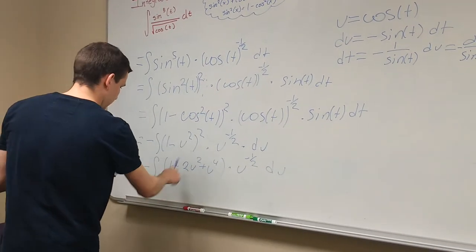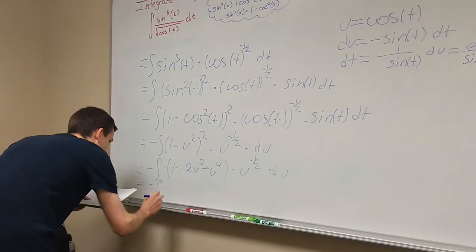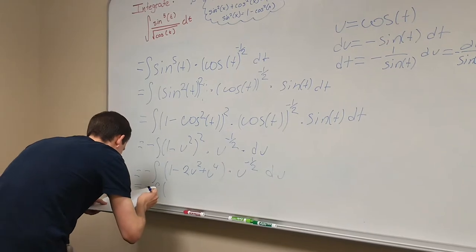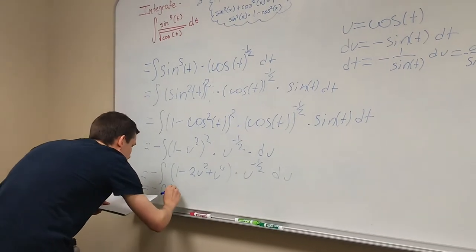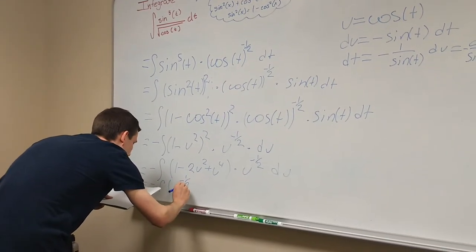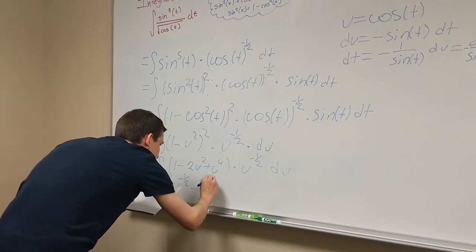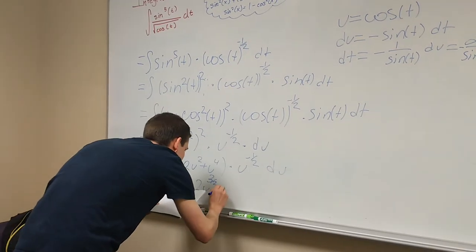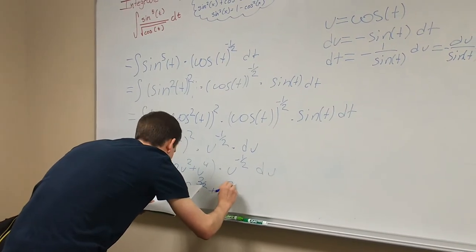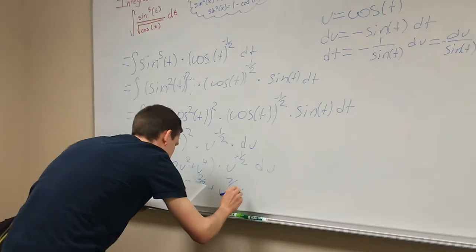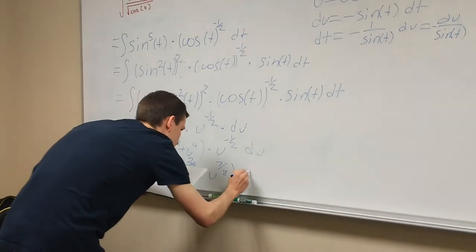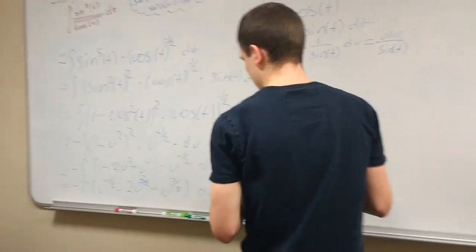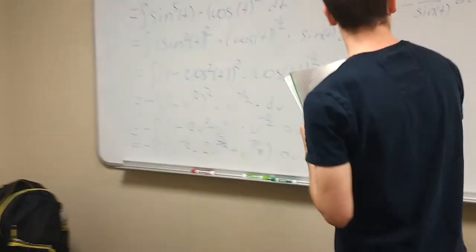We will multiply each term by u to the negative one half, which will give us u to the negative one half minus two u three over two plus u seven over two du. And we'll now separate the integral.